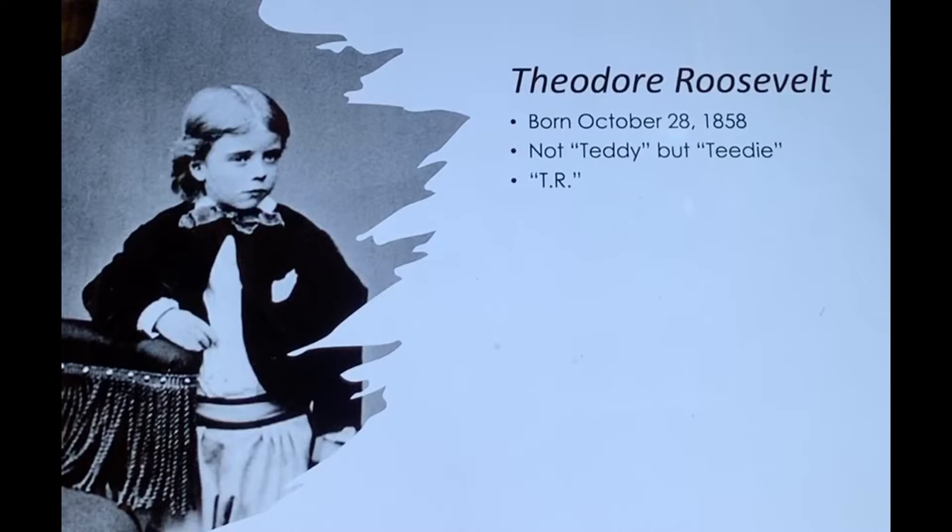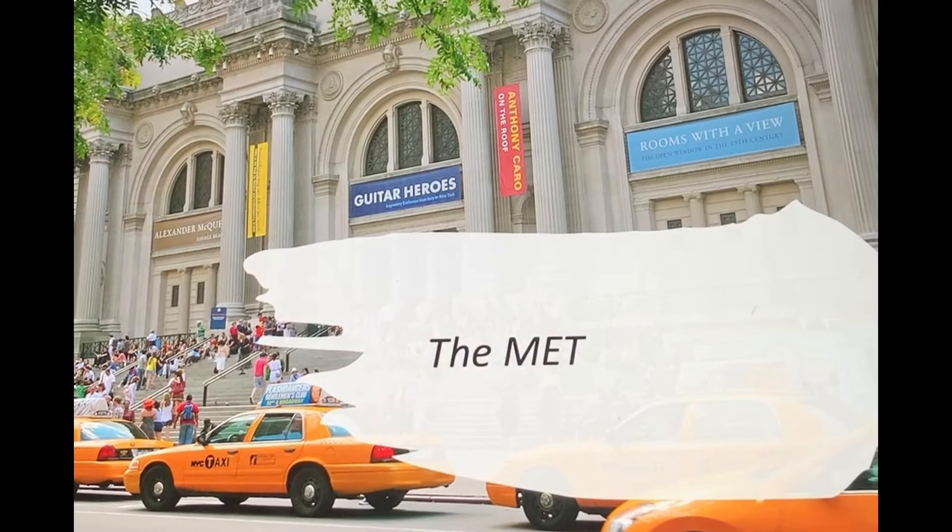T.R.'s father was named Theodore Roosevelt Sr., sometimes referred to as Thee. He was a prominent businessman in New York and became a prominent philanthropist. Thee was a founder of the Metropolitan Museum of Art, also called The Met.